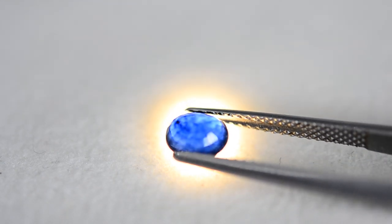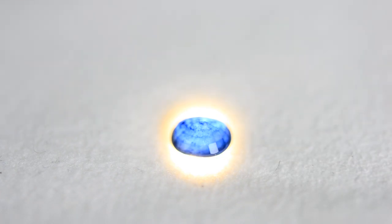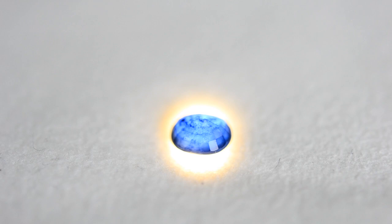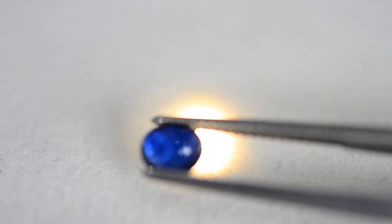Once you place a stone with this diffused light on the surface of the cloth, you can start to make calls. If the sapphire is treated with diffusion treatment, you will likely see a concentration of color on the edges of the stone and the stone's facets, like this stone over here.